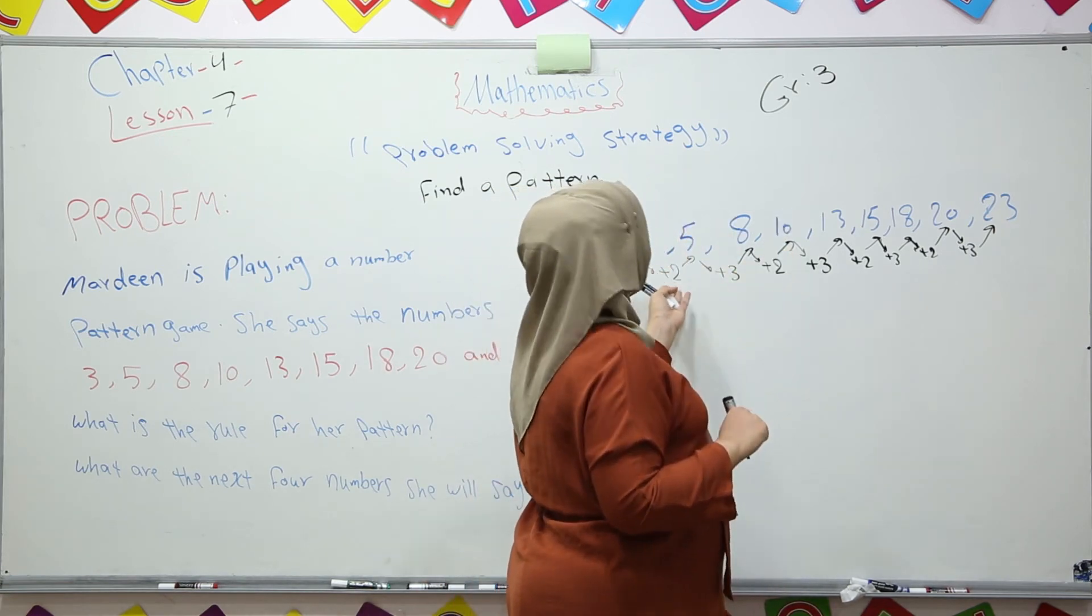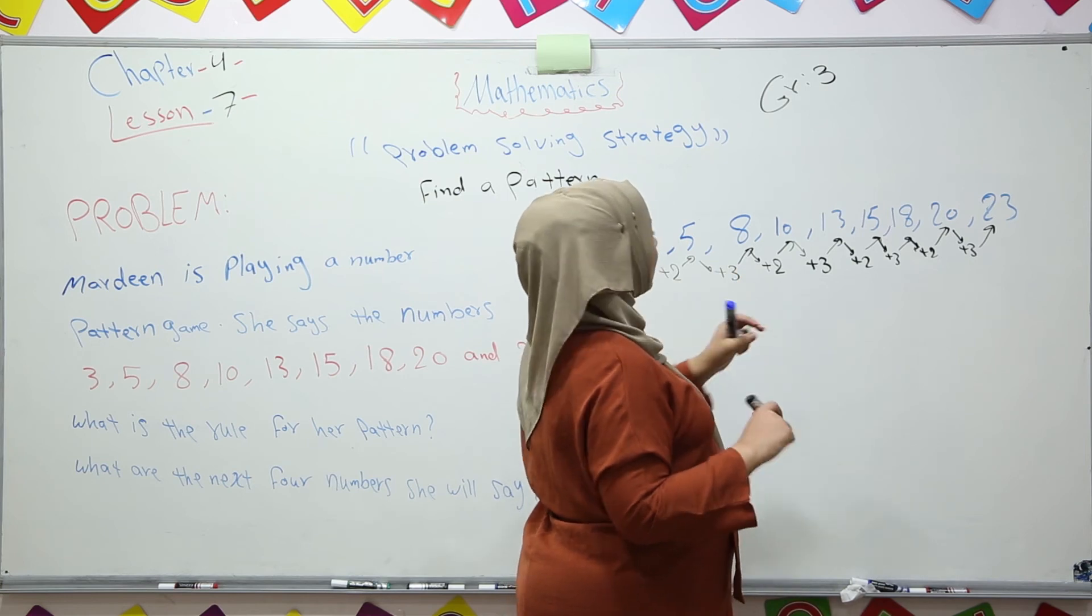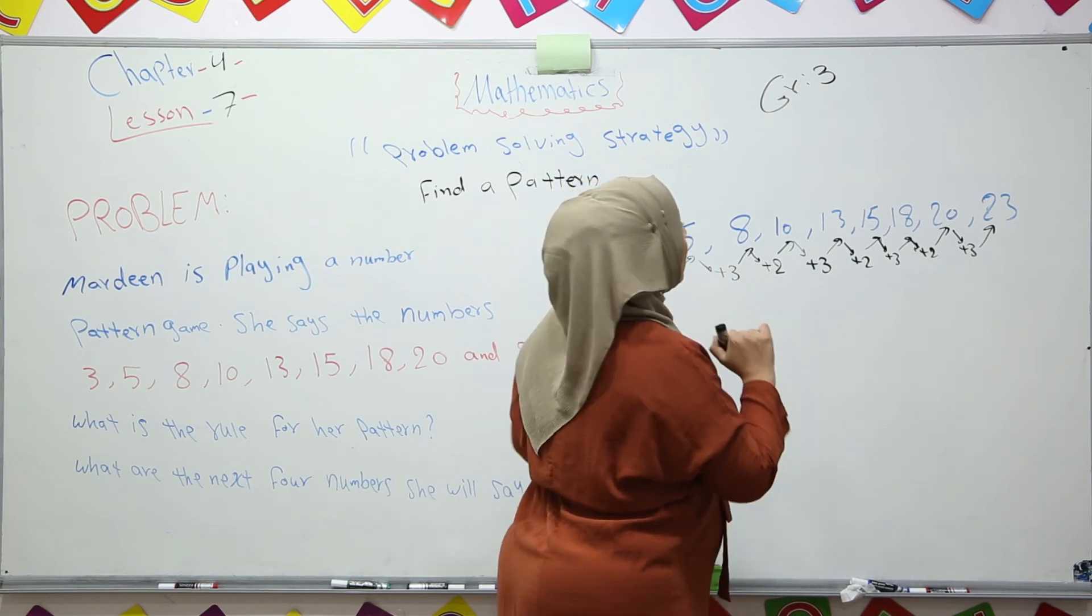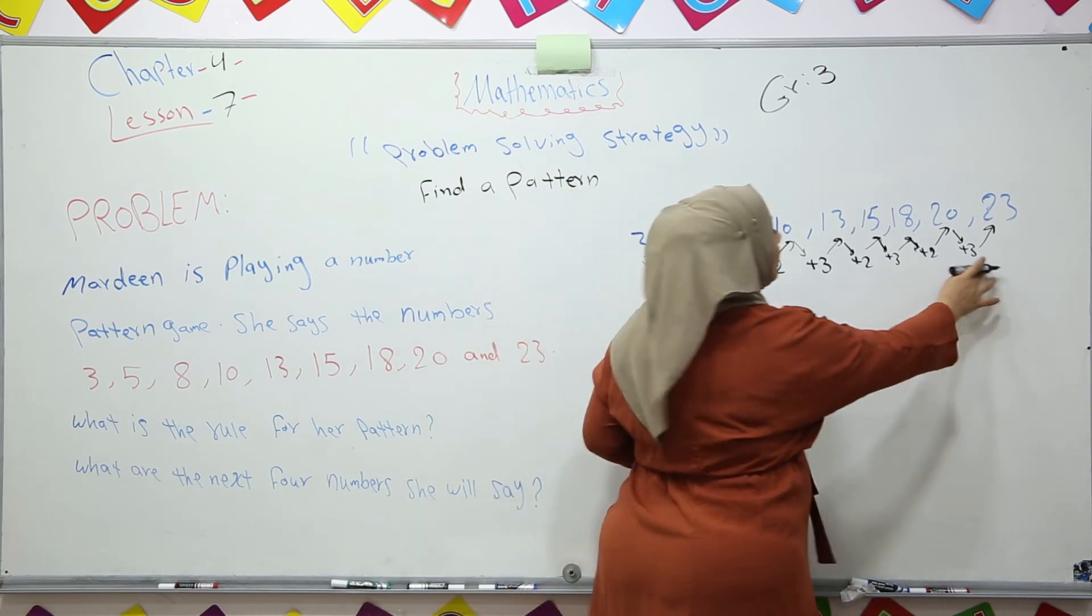So first time add by 2, then second time add by 3. Add by 2, 3. 2, 3. So we got it. We found the rule.